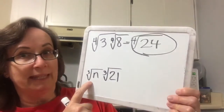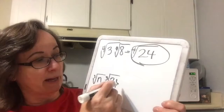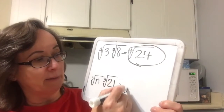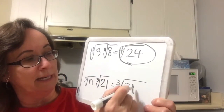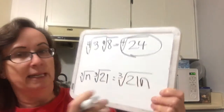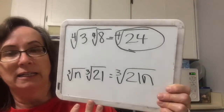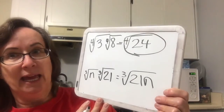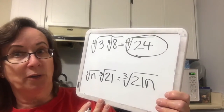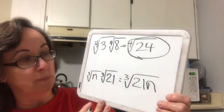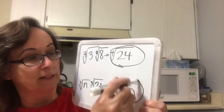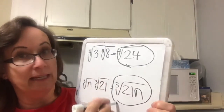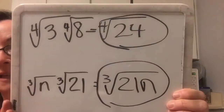When I put these into one radical, I would end up with the cubic root of 21n. And 21n has no perfect cubes in it, and therefore I would leave it just like it is.